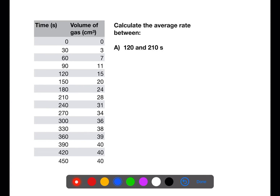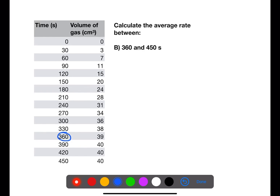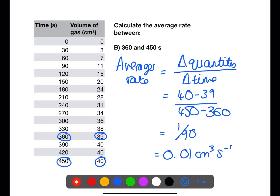Pause the video now and calculate these two average rates. For the first calculation, the average rate between 120 and 210 seconds gives a value of 0.14 centimeters cubed per second. For the second example, looking at the average rate between 360 and 450 seconds — the very end of the reaction — this gives a value of 0.01 centimeters cubed per second, showing the reaction has almost finished.